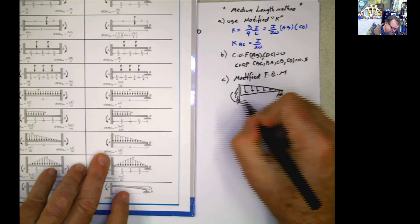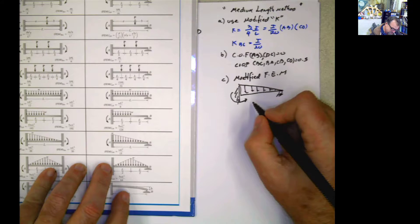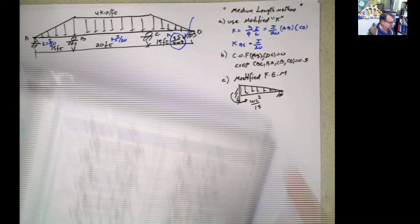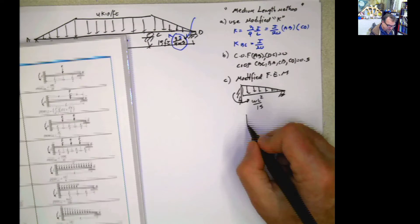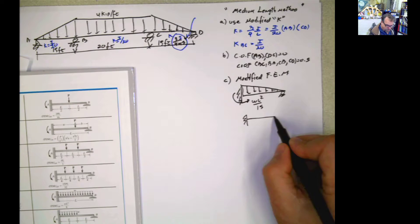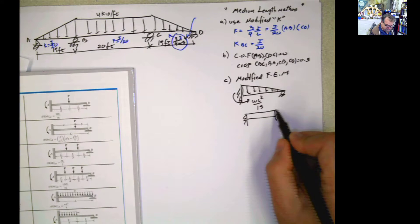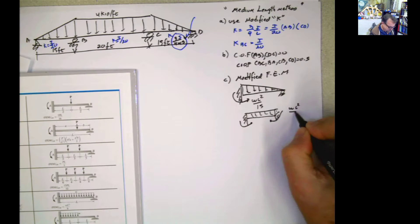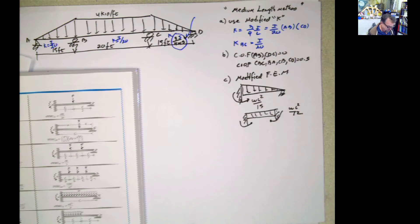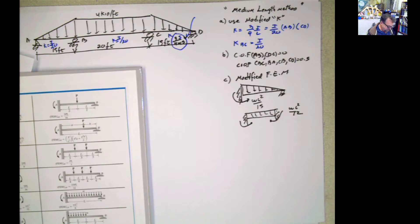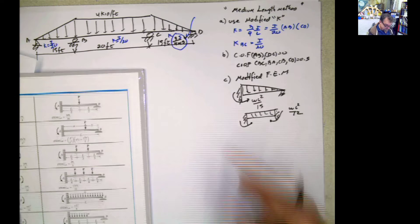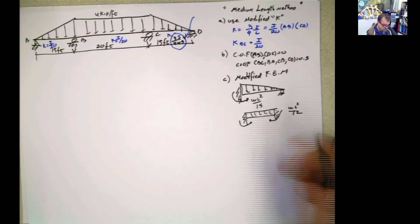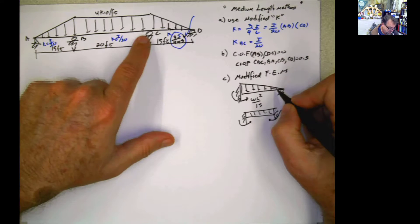And then you have this other moment here, which is WL squared divided by 15. So those are the modifications that we're going to use. For the other case, for the case of BC, we keep working with WL squared divided by 12. So we always keep working with that case because that case is continuous in both ends.